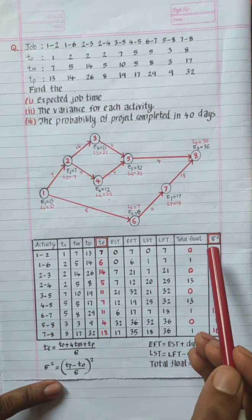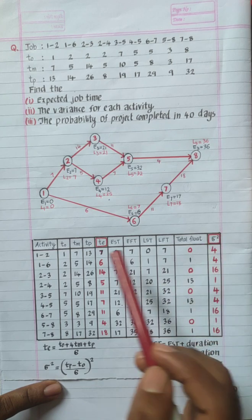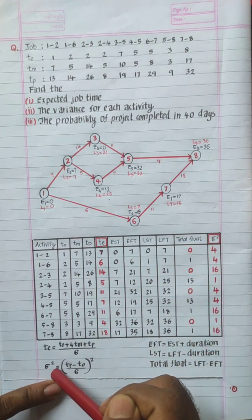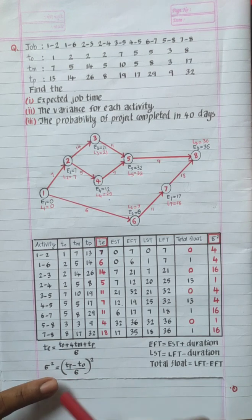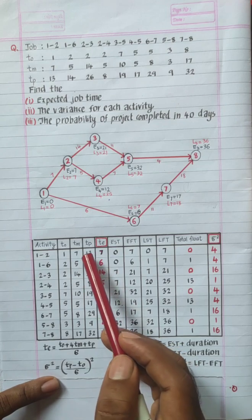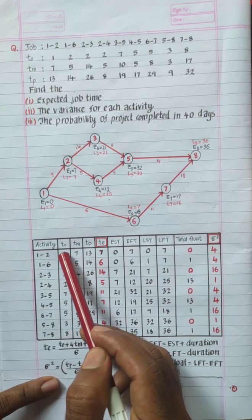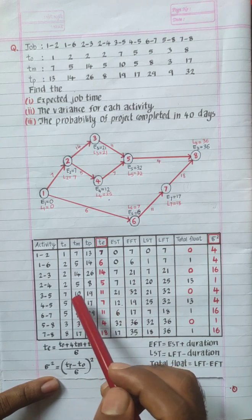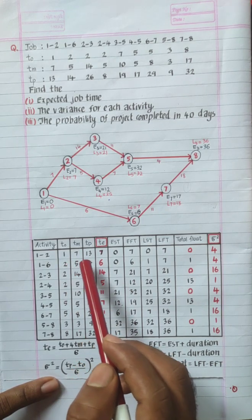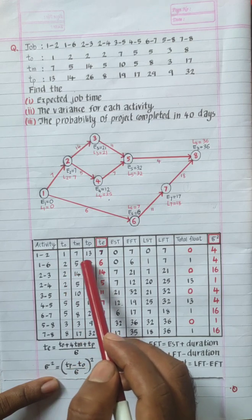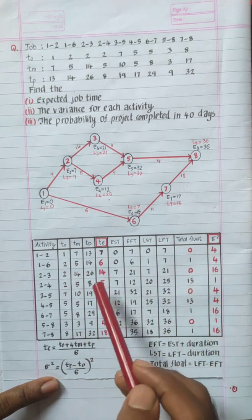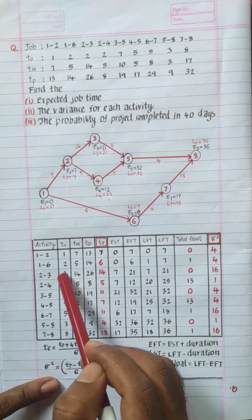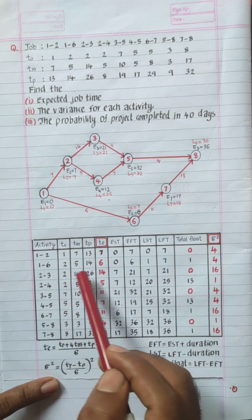Now, let's calculate the variance — sigma square. The formula is: sigma square = ((TP minus TO) divided by 6) whole squared. For activity 1–2: TP = 13, TO = 1; so (13 − 1) = 12, divided by 6 = 2, squared = 4. For the next activity: (14 − 2) = 12, divided by 6 = 2, squared = 4. For another: (26 − 2) = 24, divided by 6 = 4, squared = 16.